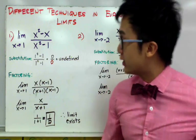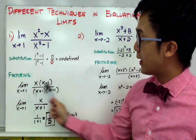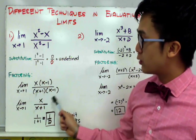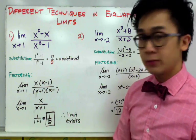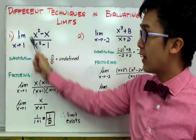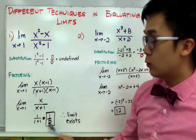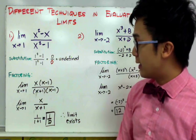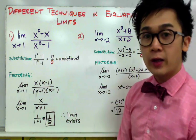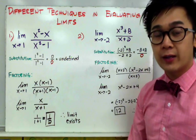Changing the denominator to x plus 1 times x minus 1, we can cancel x minus 1 from numerator and denominator, leaving x over x plus 1. By direct substitution we get 1 over 2, so the limit exists as x approaches 1 and equals 1/2. That is our first example using the factoring method.